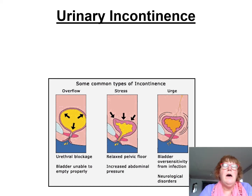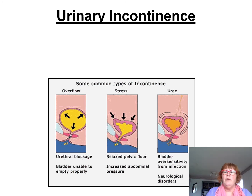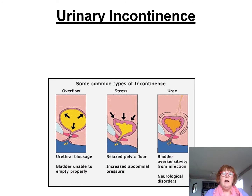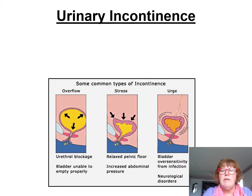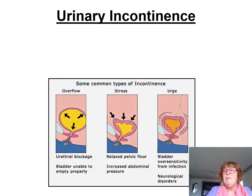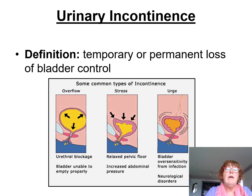Part two of urinary disease processes. The first thing we're going to look at is urinary incontinence. There are many types: overflow, which can involve a urethral block; stress incontinence, involving a relaxed pelvic floor; increased abdominal pressure; and urge incontinence, which shows oversensitivity from infection or neurological disorders. Urinary incontinence is really the temporary or permanent loss of bladder control.